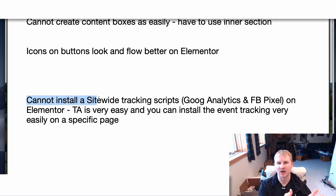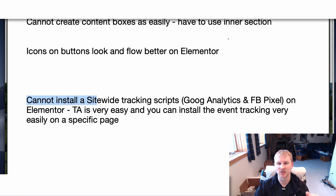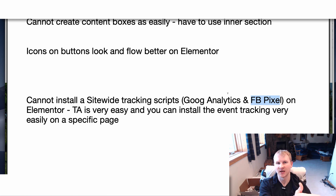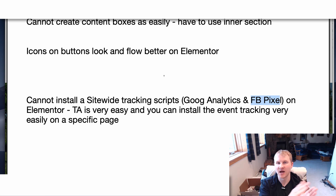The next big thing is site-wide tracking scripts. Thrive Architect blows Elementor out of the water when it comes to this. To my knowledge, if you know of a way to install a site-wide tracking script on Elementor in the backend, leave a comment below, but I was not able to discover this. This is very important to me because I like to know what's going on on my websites and client sites — Google Analytics tells you where people are accessing the site, and the Facebook tracking pixel helps you determine how many people come to the site, track click-to-call, click-to-email, or landing page visits, and retarget people on Facebook and Instagram. Thrive Architect makes it very easy to install the pixel one time and have it be site-wide.